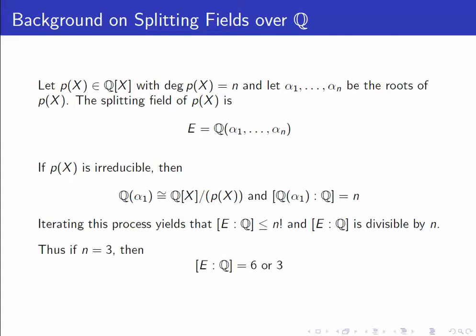So if n is equal to 3, then the degree of E over Q is less than or equal to 6 and divisible by 3. So it must be equal to 6 or 3. So we'll look at a couple of classic examples where these two different cases occur.